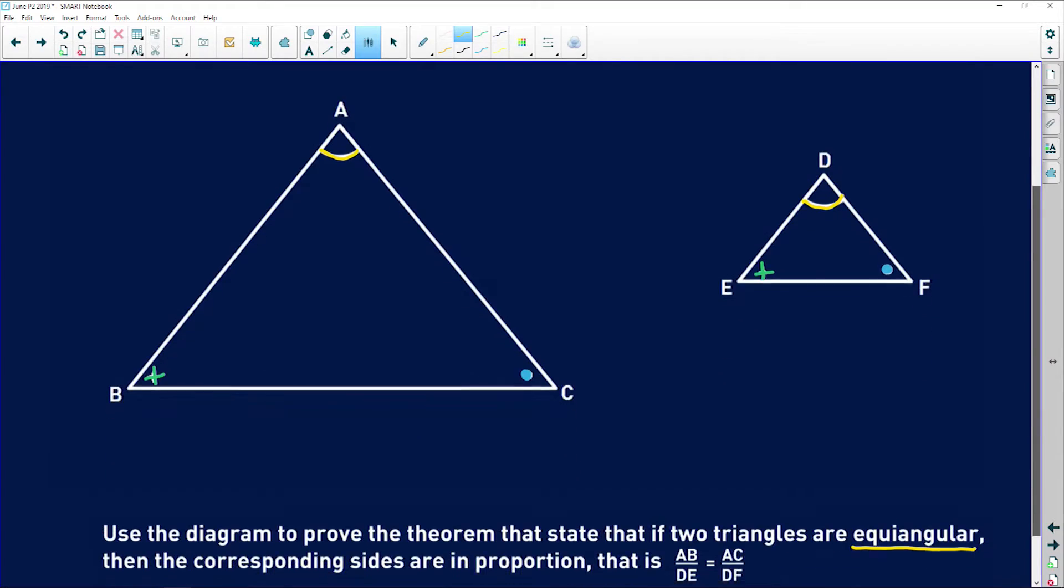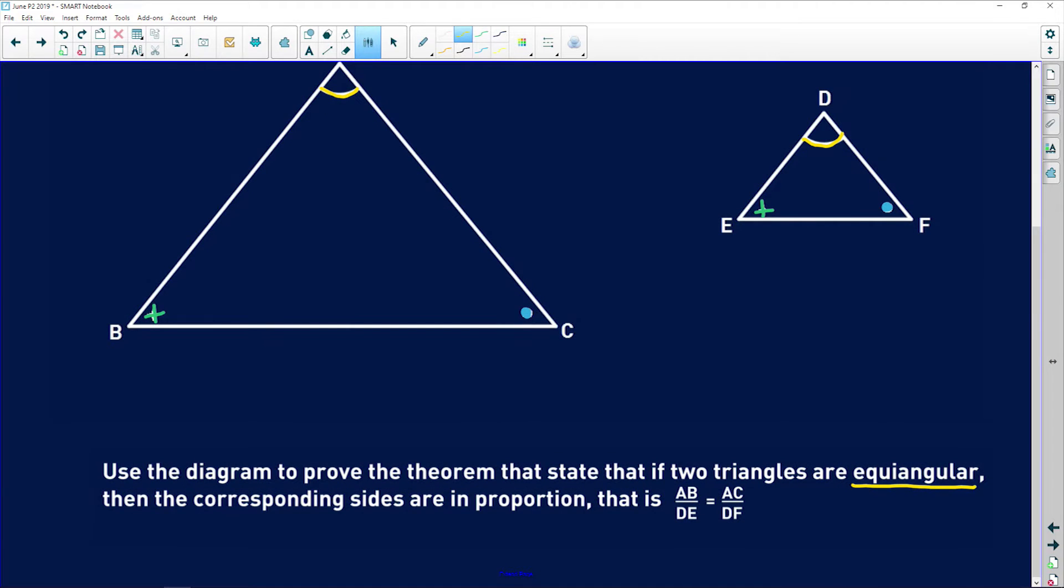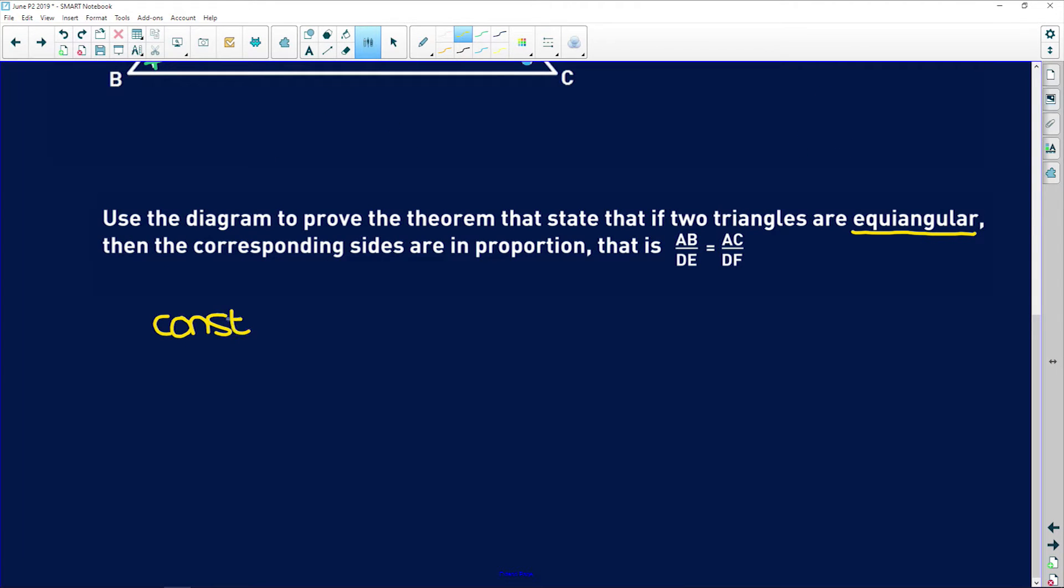First we need to say, we're going to construct some stuff. So by construction, let M and N lie on AB and AC respectively. That's basically saying that M corresponds with AB and N corresponds with AC. That's what respectively means, the order in which you list things. Respectively such that